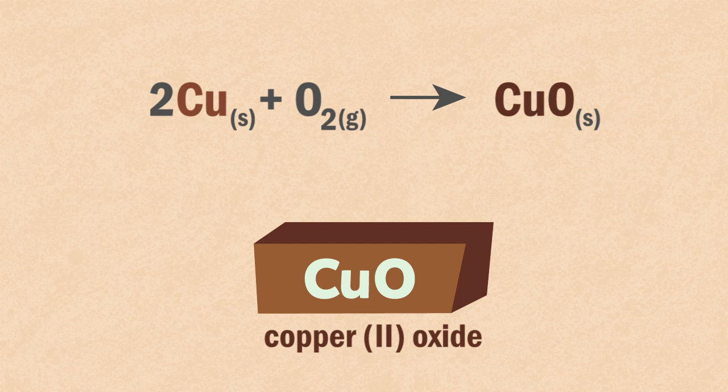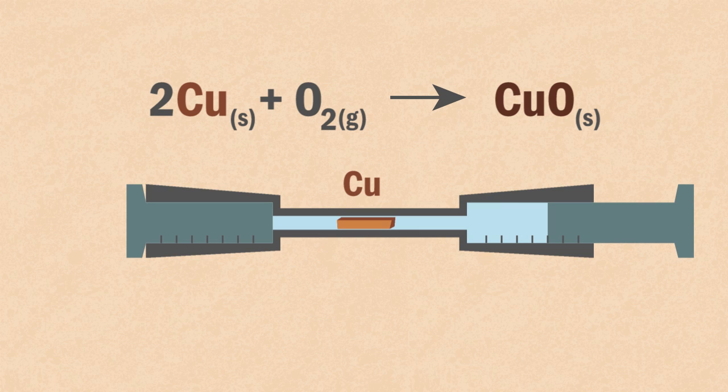This may seem useless, but you can use this reaction to measure the percentage of oxygen in the air. This is achieved by passing a known volume of air over hot copper, and measuring the decrease in volume as the oxygen reacts with it.